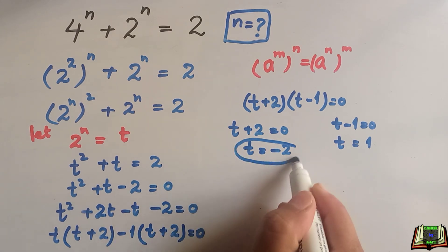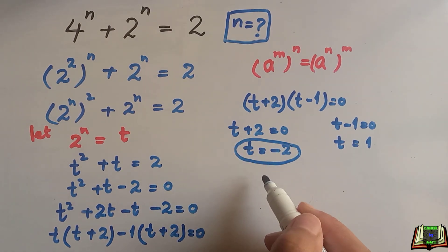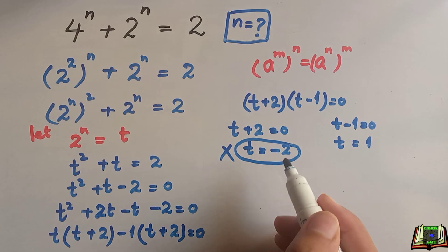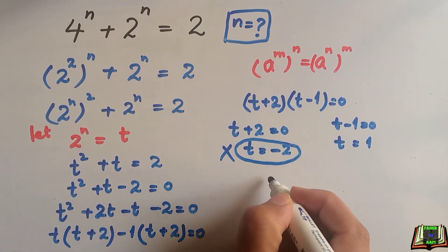As this value of t is negative and we know that t belongs to real numbers, so we are going to just ignore this and we will take t is equal to 1.